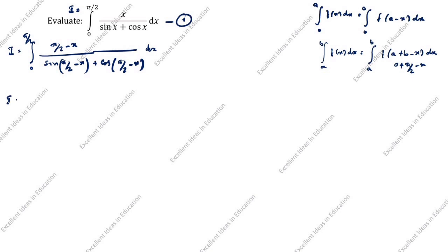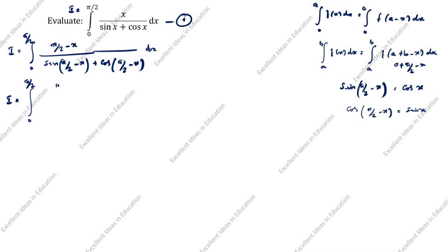Now we apply the trigonometric identities: sin(π/2 - x) = cos x and cos(π/2 - x) = sin x. Substituting these, the second equation becomes: I equals the integral from 0 to π/2 of (π/2 - x) divided by (cos x + sin x) dx.